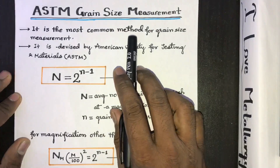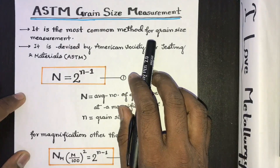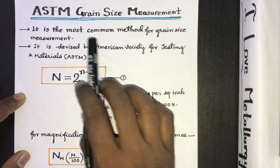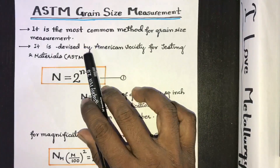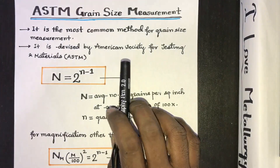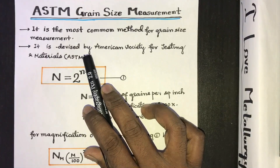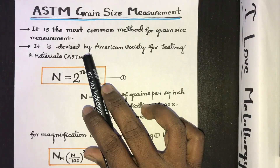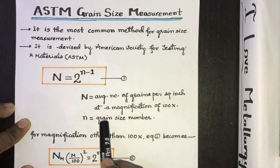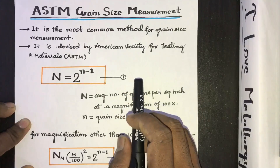The grain size in a polycrystalline material is determined in order to get information about its mechanical strength. ASTM Grain Size Measurement is the most common method for grain size measurement, and this method is devised by the American Society for Testing and Materials. The ASTM has prepared several standard comparison charts, all having different grain sizes. To each grain size, a number — that is n, the grain size number — is assigned, and the value of small n ranges from 1 to 10.